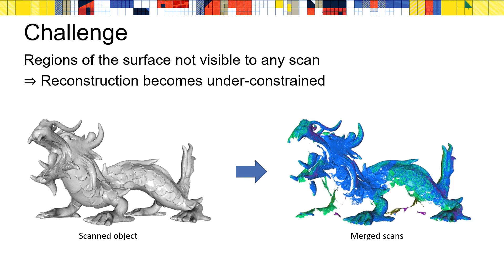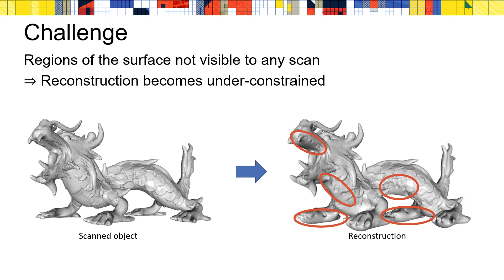Unfortunately, the object itself may have complex geometry and physical constraints may make it impossible to image all parts of the surface. This results in a point cloud that undersamples the surface, which in turn results in poor surface reconstruction, with the surface often ballooning out in regions of missing data.